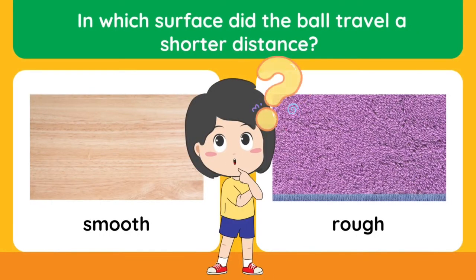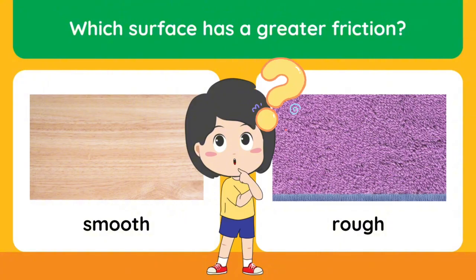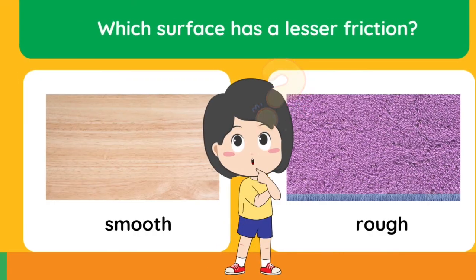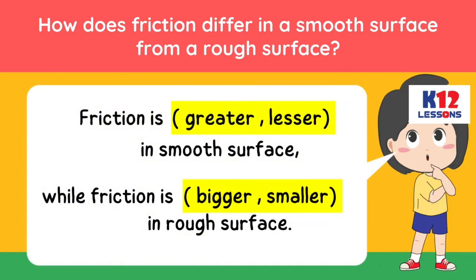In which surface did the ball travel a shorter distance? In which surface did the ball travel a longer distance? Which surface has a greater friction? Which surface has a lesser friction? How does friction differ in a smooth surface from a rough surface? Friction is lesser in a smooth surface, while friction is bigger in a rough surface.